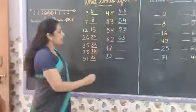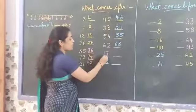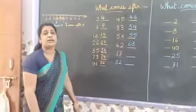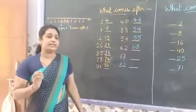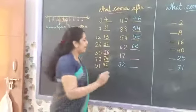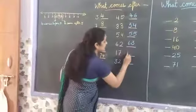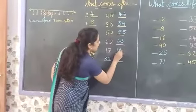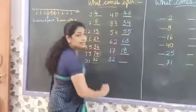And next number is 17. What comes after 17? 1, 8 — that is 18. You have to write 1, 8 — 18, like this.